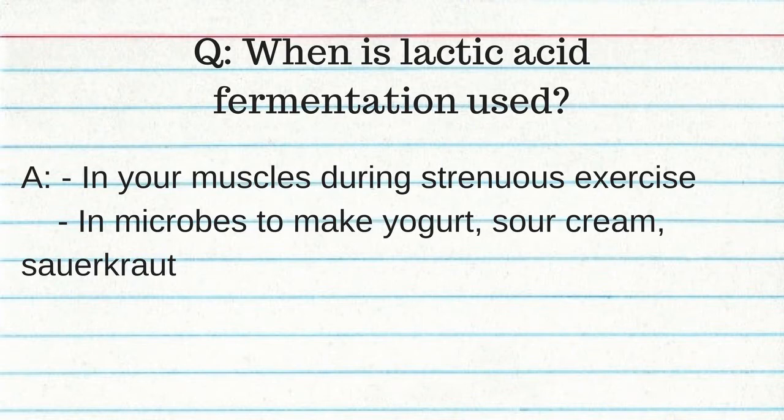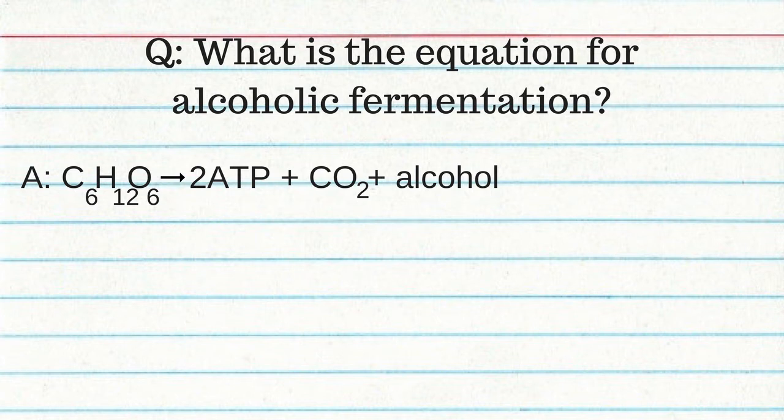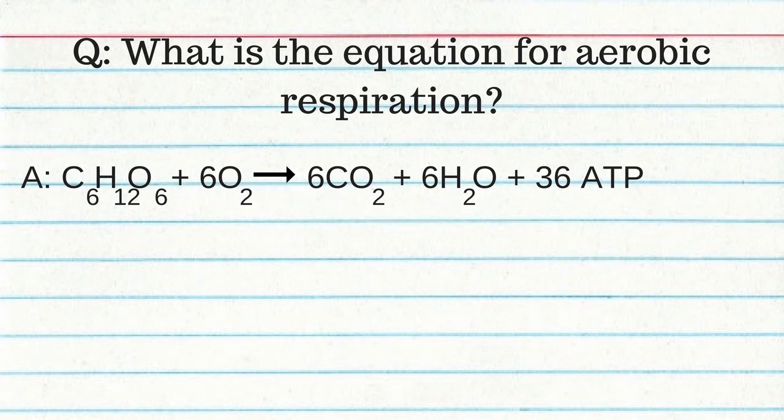Lactic acid fermentation is used in muscles during strenuous exercise and in microorganisms that make yogurt, sour cream, and sauerkraut. The equation for lactic acid fermentation: C6H12O6 → 2 ATP + 2 lactic acid. Alcoholic fermentation occurs in yeast cells. The equation: C6H12O6 → 2 ATP + CO2 + alcohol. The equation for aerobic respiration: C6H12O6 + 6O2 → 6CO2 + 6H2O + 36 ATP — you get a lot more ATP from aerobic respiration.